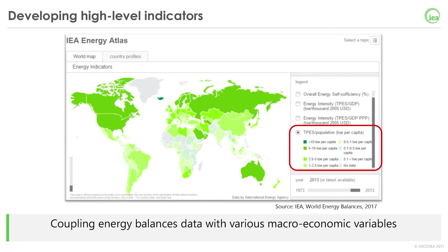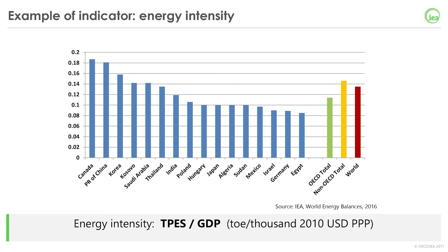This is what we have done on our IEA Energy Atlas, available to everyone on our website. For example, this chart shows energy intensity levels in different countries. Energy intensity is defined as TPES over GDP and represents the amount of energy needed to generate the whole economic output of a country. We can see there are significant differences between countries, and as a group, OECD countries together have a lower energy intensity than non-OECD countries.